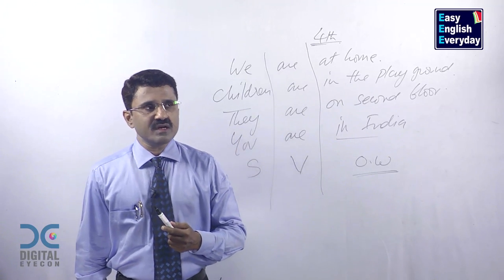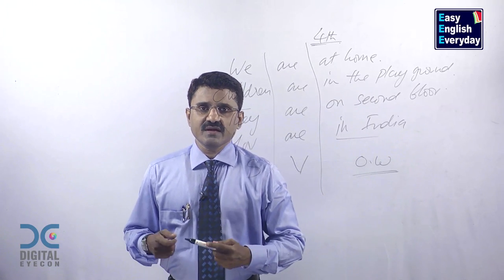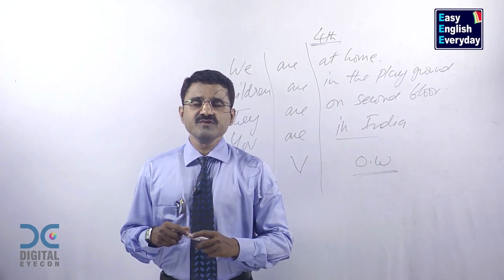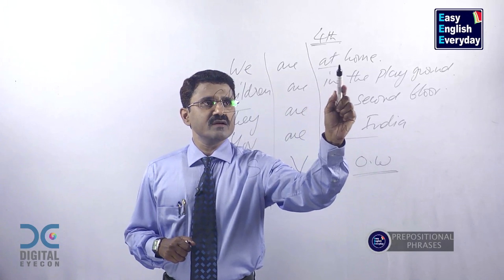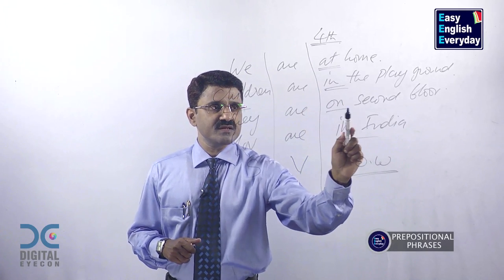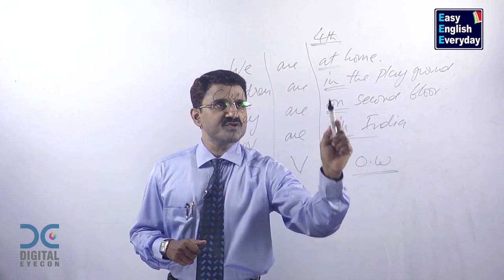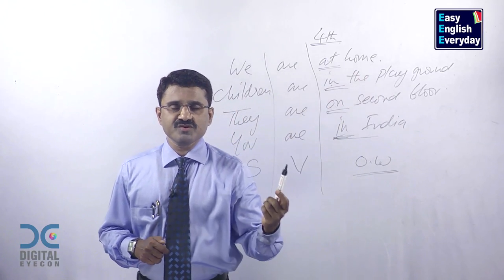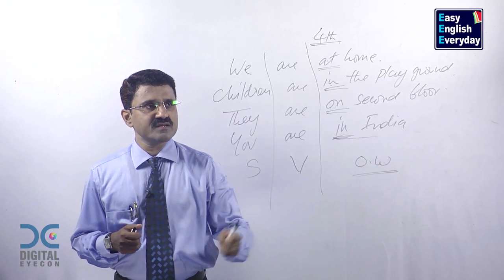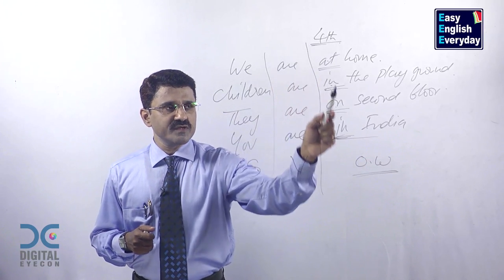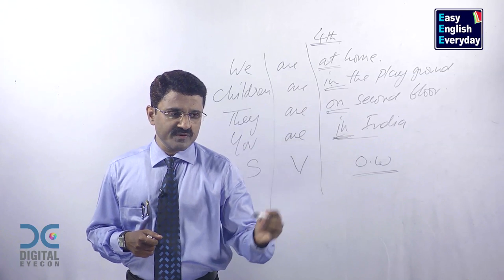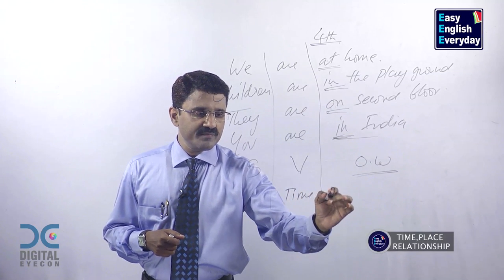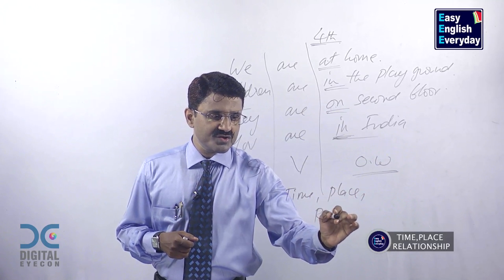In the first category we used nouns, in the second category we used adjectives, in the third category we used -ing forms, and now we are using prepositional phrases. These are called prepositions: at, in, on. If you add a noun to a preposition it becomes a prepositional phrase. 'Are' goes with prepositional phrases also, and this type of sentence can be used to talk about time, place, or relationship.